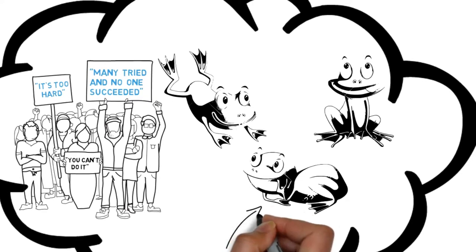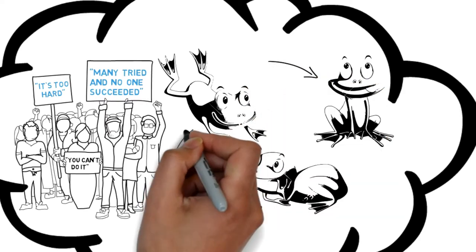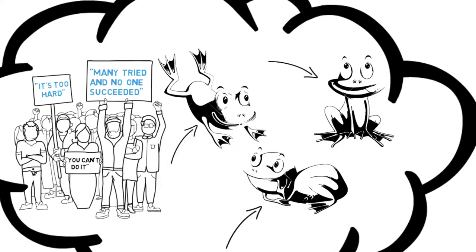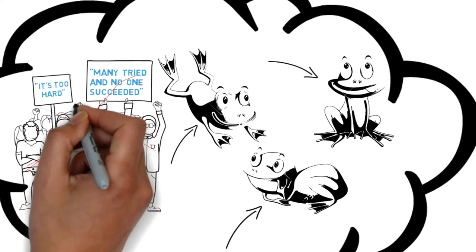The first frog gave up after a few minutes and retired from the race. The second frog took a few more minutes until he eventually gave up. But the third frog kept going till the end, despite the crowd's shouts, and despite all the voices trying to suppress him.